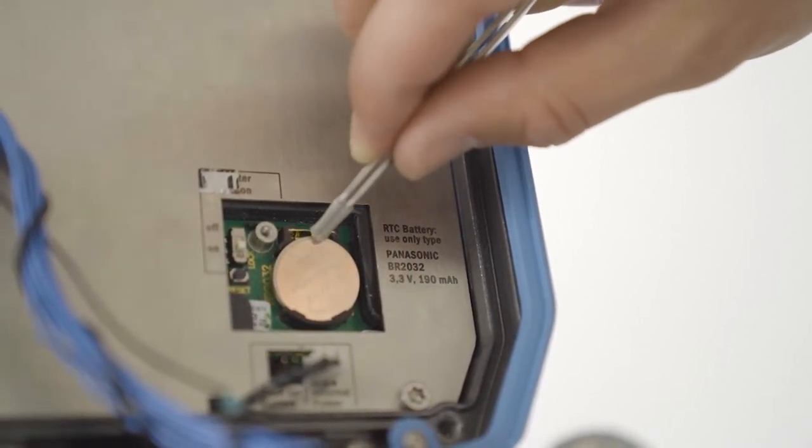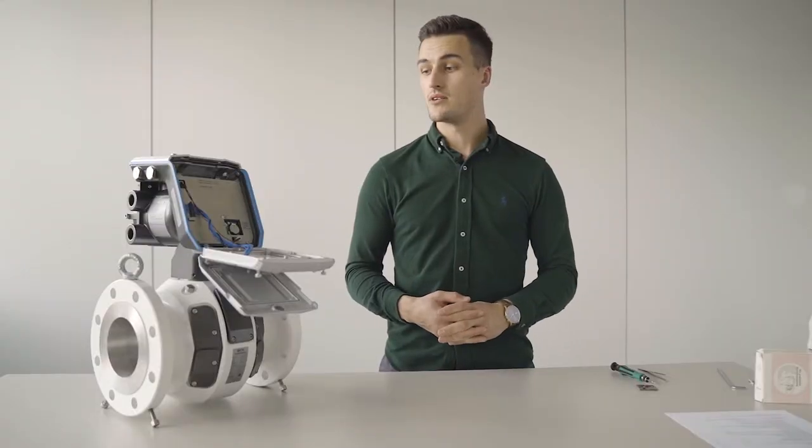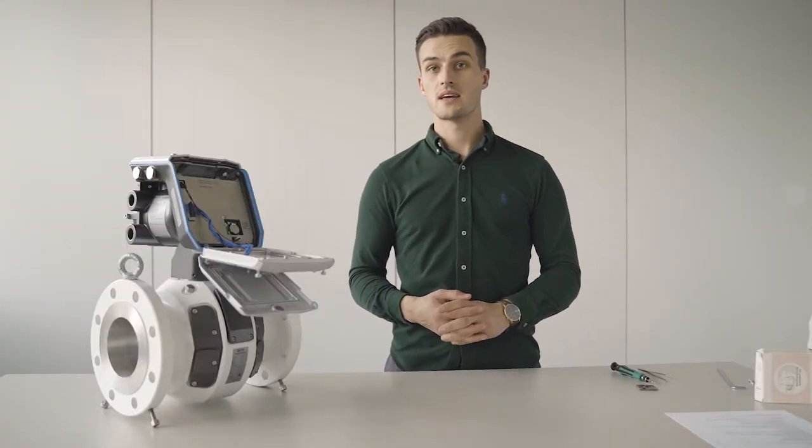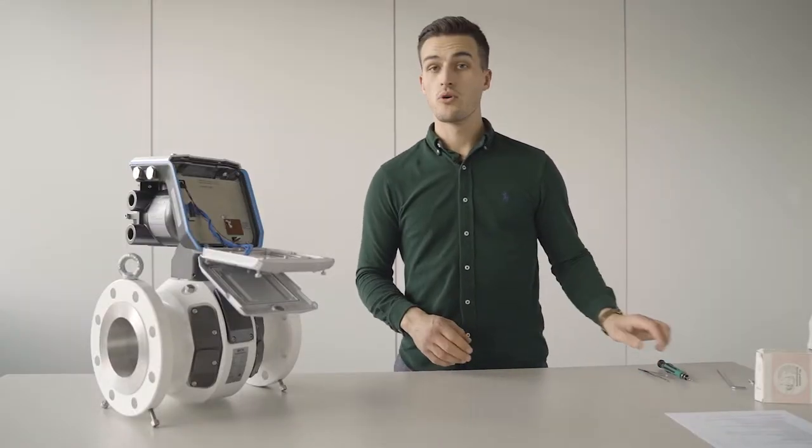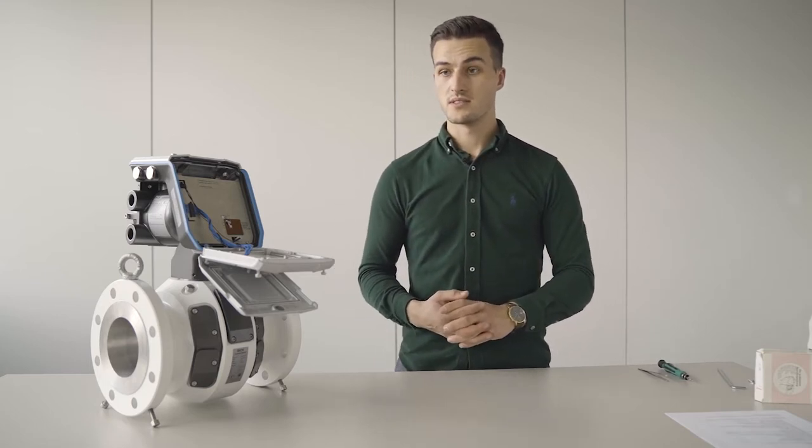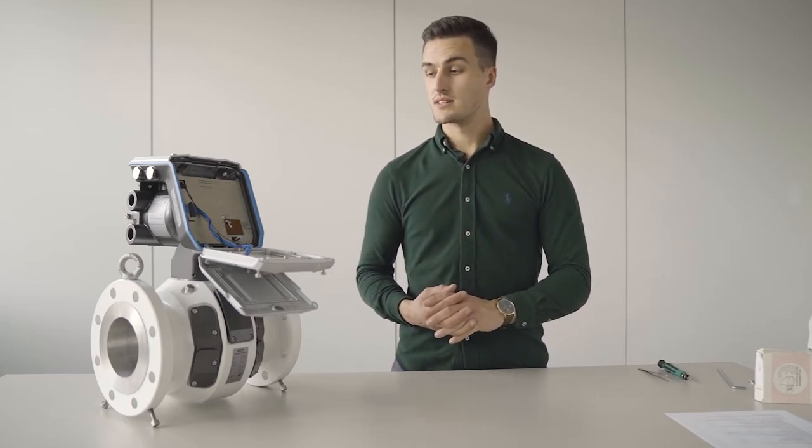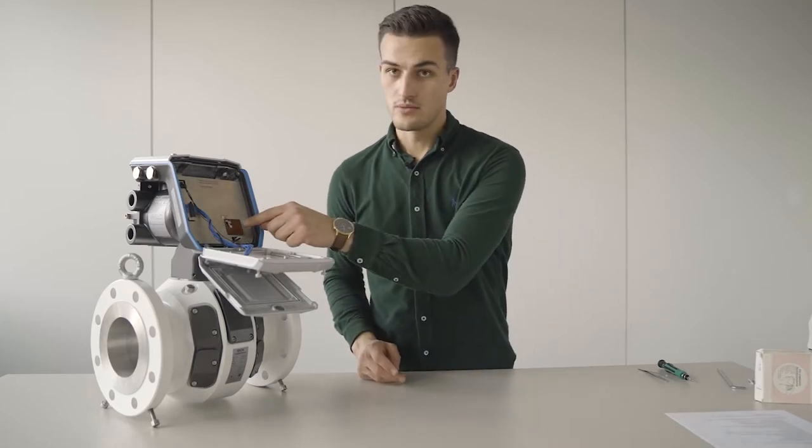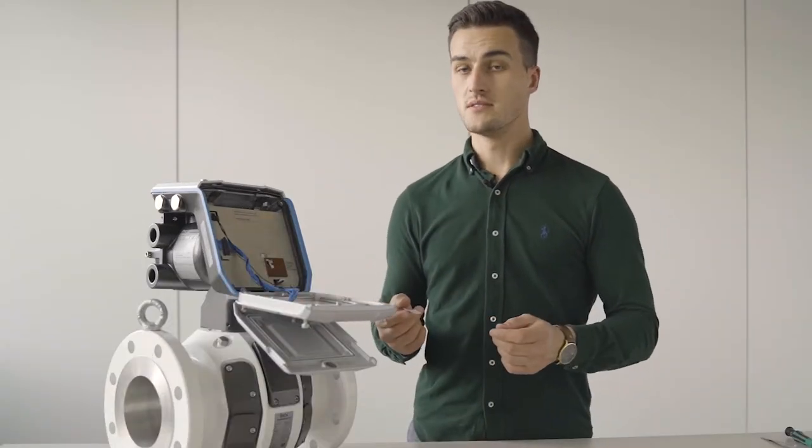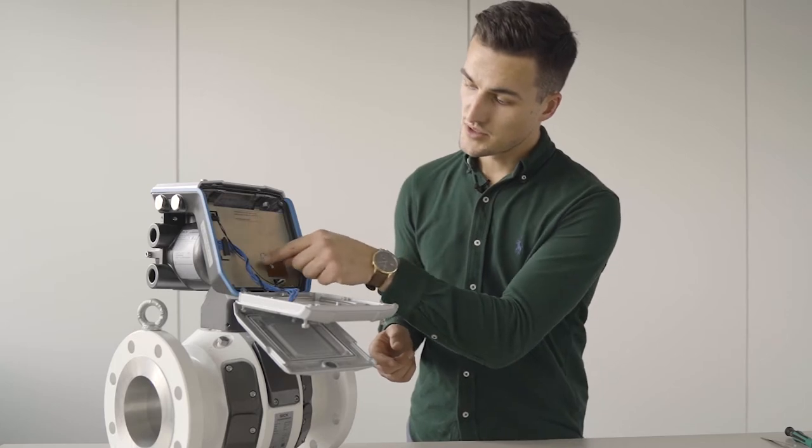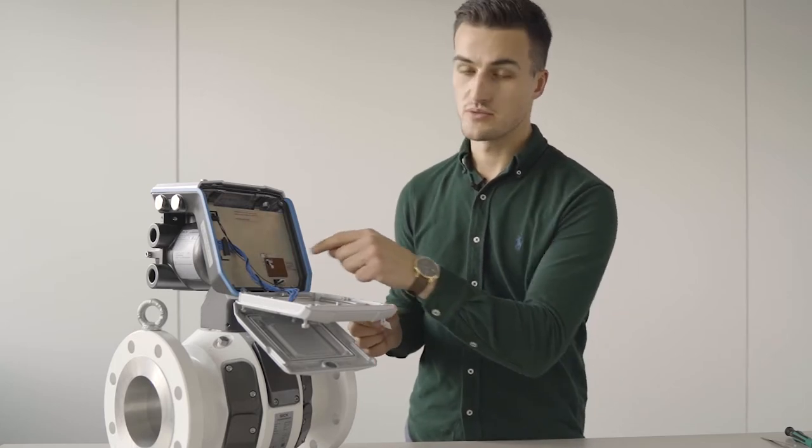After the RTC battery is back into place, we can now cover the RTC battery again with the protection flap. Before placing another metrological seal on the protection lock, please ensure that it stands on. The new metrological seal should cover the protection lock and the screw as well.